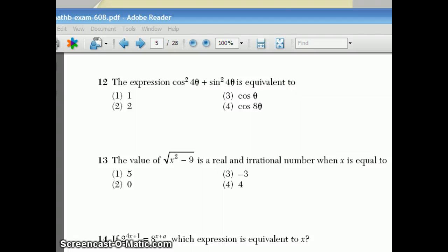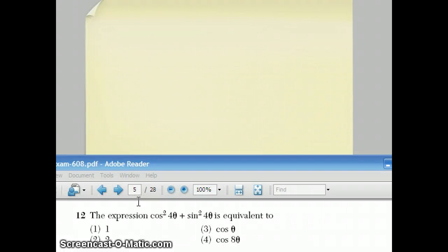Question number 12 says the expression cosine squared 4 theta plus sine squared 4 theta is equivalent to. Now, on this question, you have to be aware of a famous trig identity, which is sine squared theta plus cosine squared theta. That always equals one. No matter what angle you pick for theta, that's going to be true. And there's actually not any work to do on this question because this identity, if you were to replace the sine, the theta with 4 theta, it would still be an angle. It would still equal one. And that's why the answer to this question is choice one. You could have also plugged in numbers for theta just to verify that that comes out to be true.